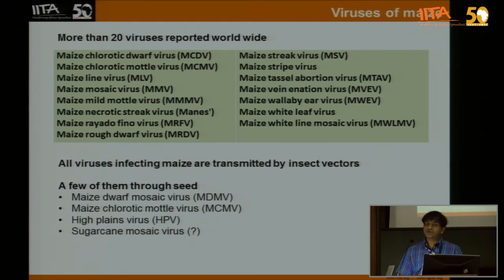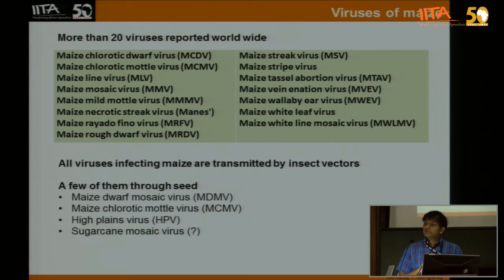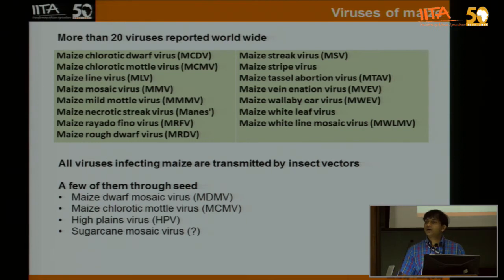Maize chlorotic mottle is not present here, so if you are doing seed production, you don't have to worry about that. High plains virus is not known to occur in Africa. And maize dwarf mosaic is recognized in East Africa but not yet in West Africa. So you need to understand the context — if you impose testing for all viruses known to affect maize, it is good in principle, but it will add a lot of unnecessary cost to your monitoring process.